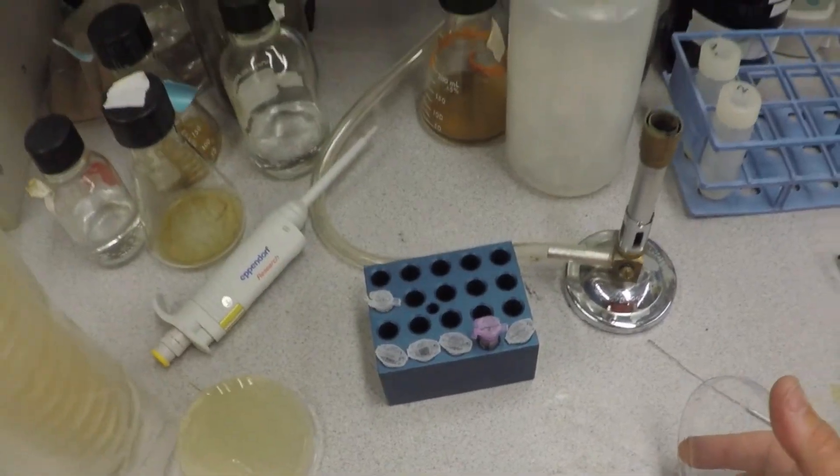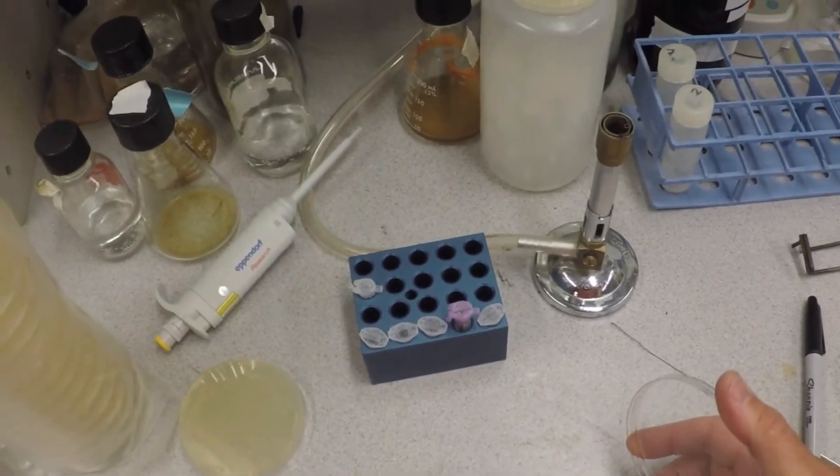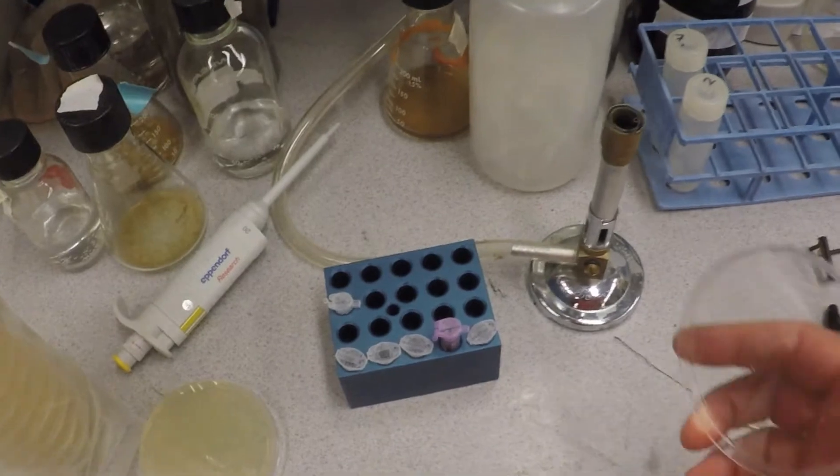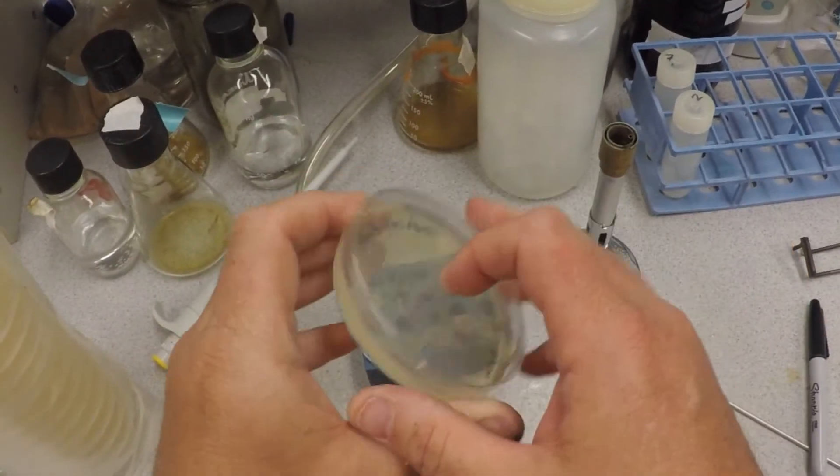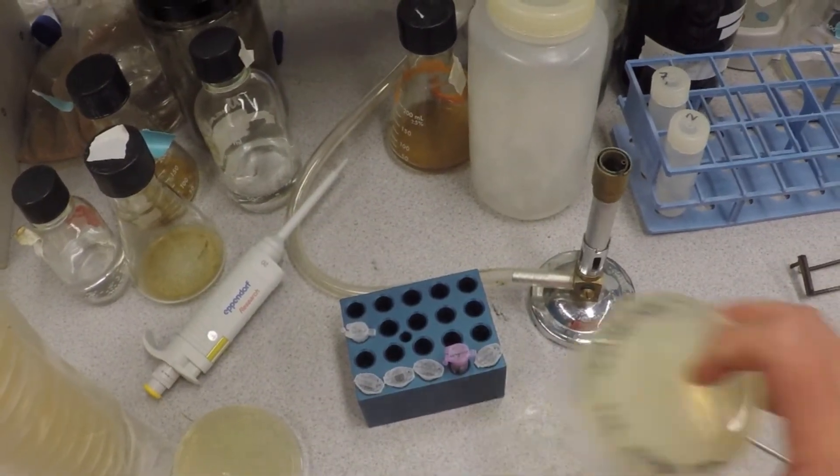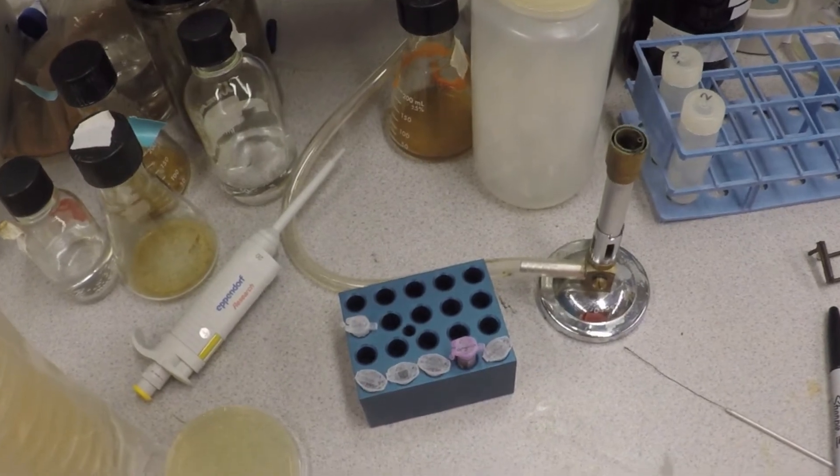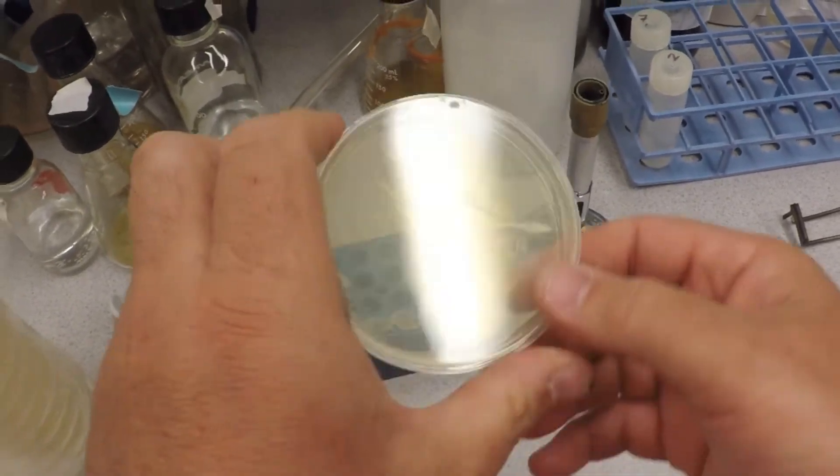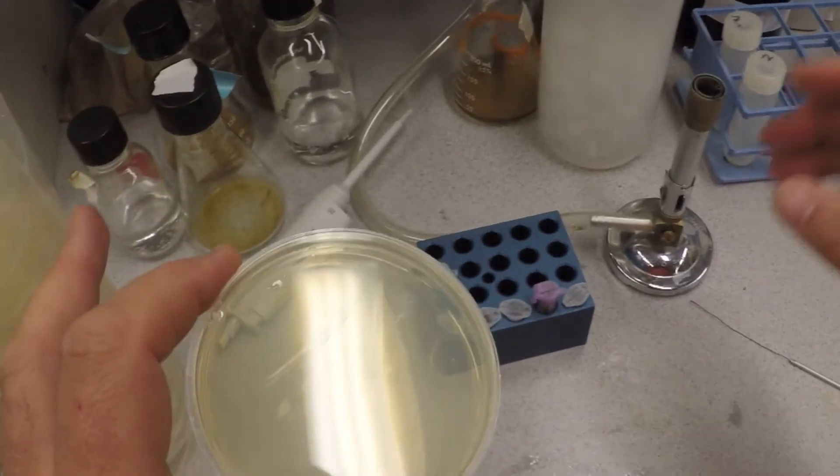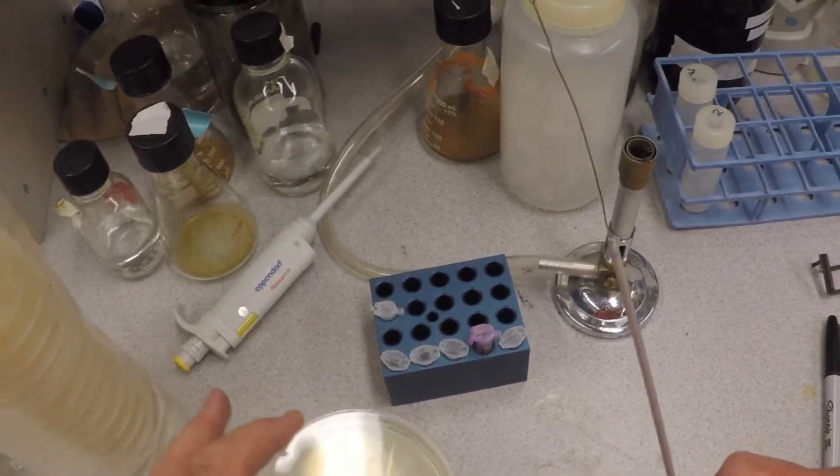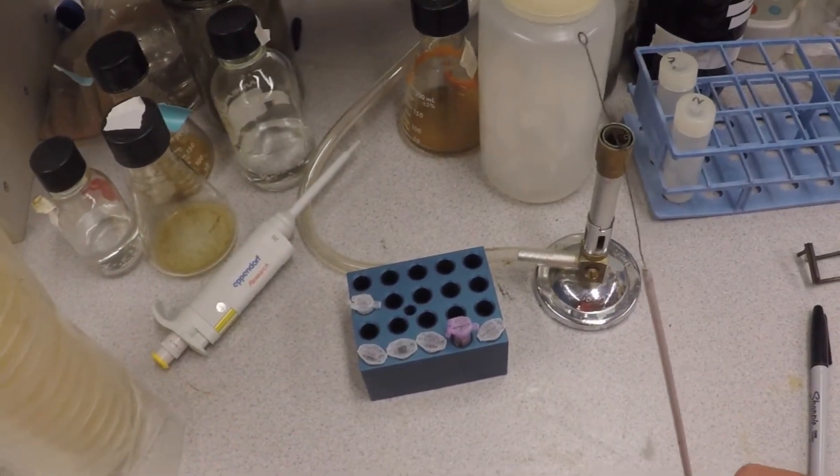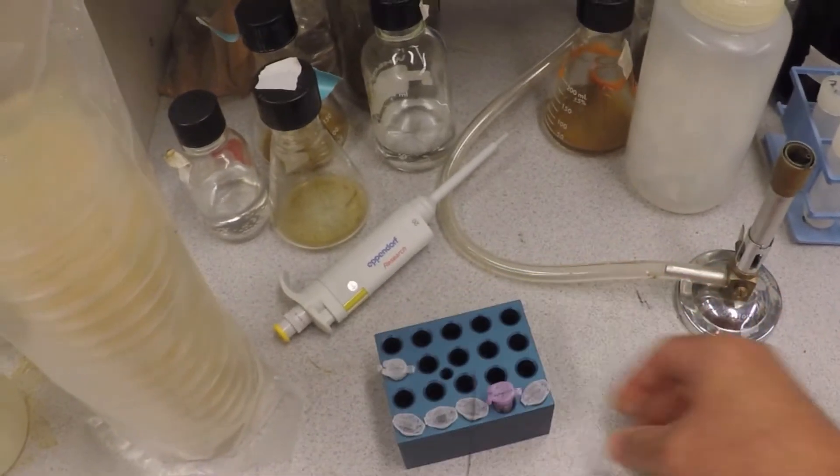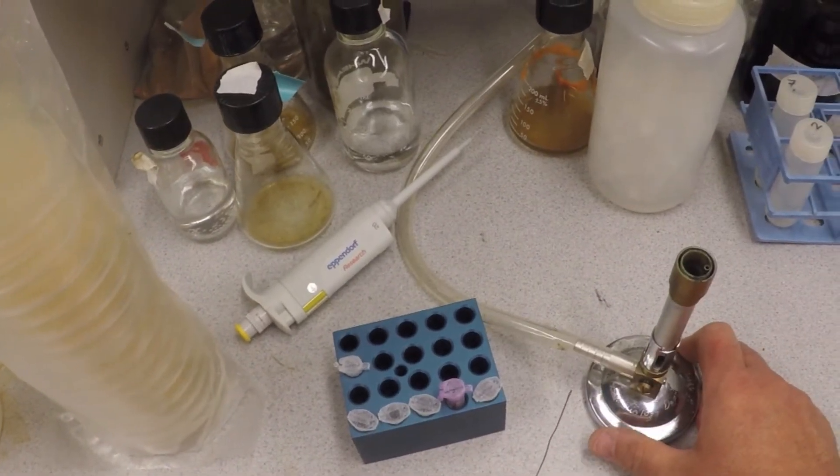We'll incubate those. That'll be a fun experiment. Now getting back to the task at hand, we're going to show you how to streak a plate. You need a way to sterilize that loop, and in order to do that you're going to use methane, you're going to use a flame, you're going to use gas.